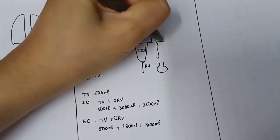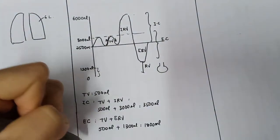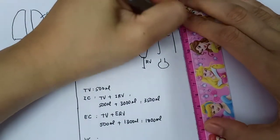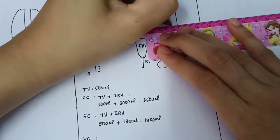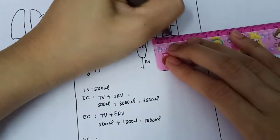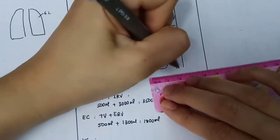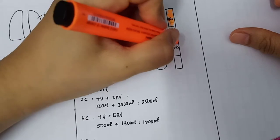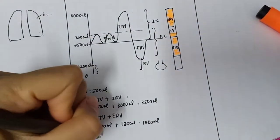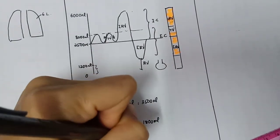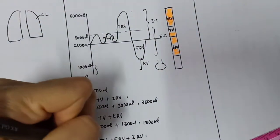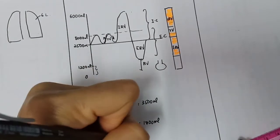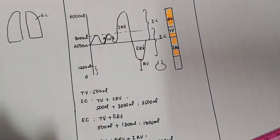So this is the expiratory capacity. What is the vital capacity? Vital capacity is basically the inspiratory residual volume plus the tidal volume plus the expiratory residual volume. So the math gives us: 500 ml tidal volume, plus 1,300 ml expiratory residual volume, plus the inspiratory residual volume of 3,000 ml — so we have 4,800 ml as the vital capacity.